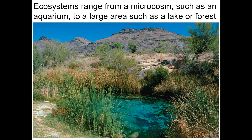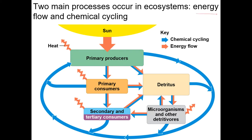There are two major processes in ecosystems: energy flow and chemical cycling, and it's important to know the difference. Energy flow has a start and a stop — the start is the sun, which powers producers to convert solar radiation into organic molecules. Those primary producers are eaten by primary consumers, then secondary consumers, then tertiary consumers, and eventually energy ends up as heat. That heat is the 'end' of energy flow.